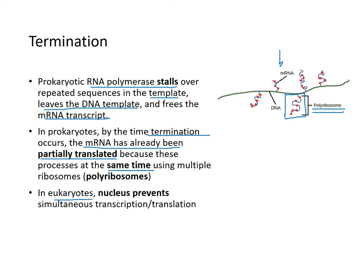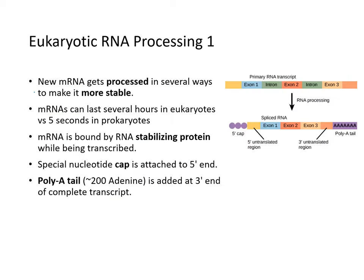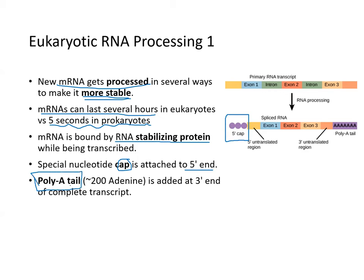In eukaryotes, the nucleus prevents simultaneous transcription and translation — the mRNA must be transported out of the nucleus into the cytoplasm. New messenger RNA must be processed in eukaryotes, and once processed it becomes far more stable — messenger RNA can last several hours in eukaryotes versus about five seconds in prokaryotes. Messenger RNA is bound by RNA-stabilizing proteins while being transcribed, a special nucleotide cap is attached to the 5' end, and a poly-A tail of about 200 adenines is added to the 3' end of the completed transcript.